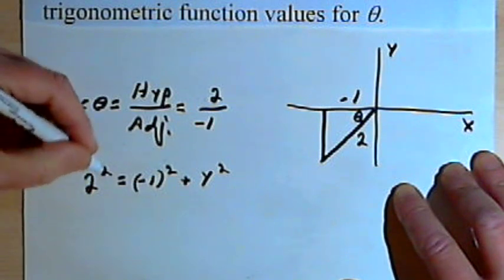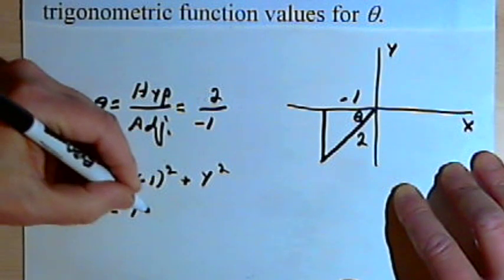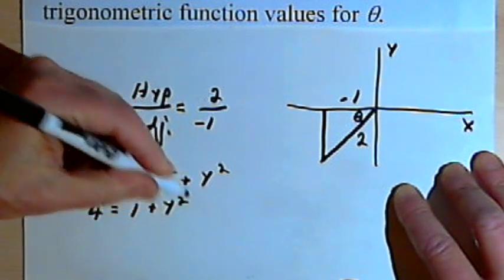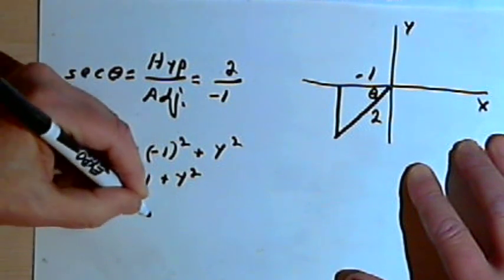So I've got 2 squared, which is 4, equals negative 1 squared, which is 1, plus y squared, which means that y squared equals 3.